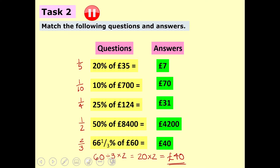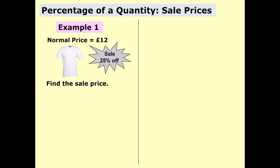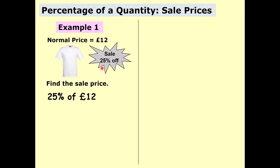We've got one more example. You might see percentages of a quantity all around when you're in the shops, to do with sale prices. Here we have a t-shirt on sale for 25% off. We'll use our knowledge of finding percentages of a quantity to figure out the sale price. If the t-shirt is originally £12, we first find what 25% of £12 is. 25% is a quarter, so divide 12 by 4 to get £3.